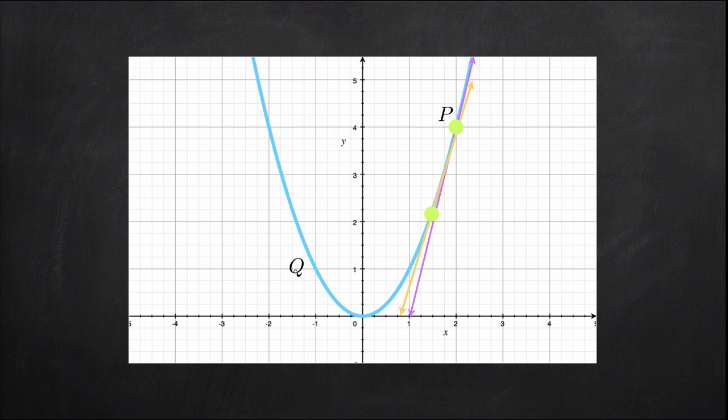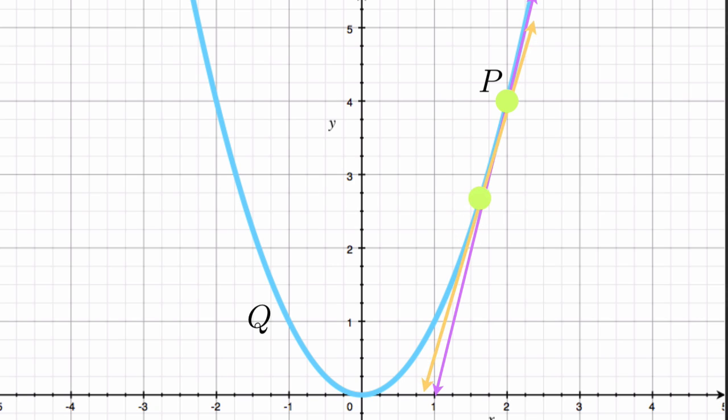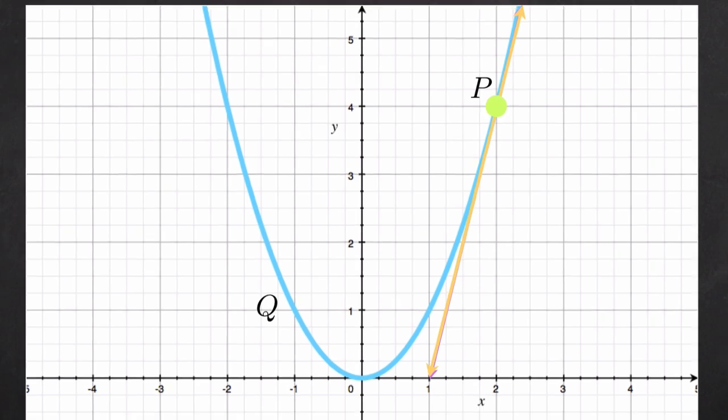See how the angle between the secant and tangent lines got smaller? Now, if we keep pushing Q closer and closer to P until eventually we eliminate the distance between them and Q is right on top of P, then the secant line becomes the tangent line exactly.